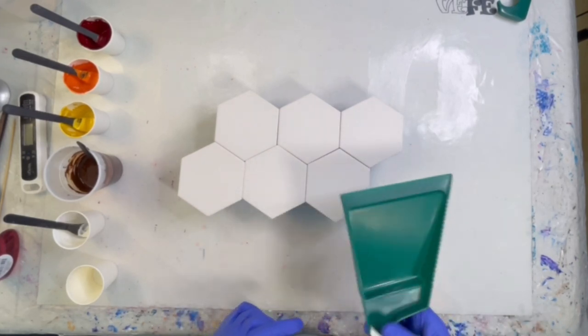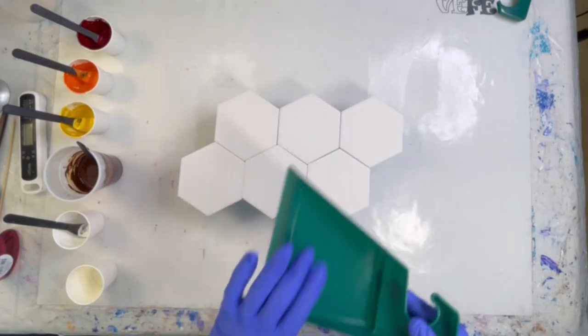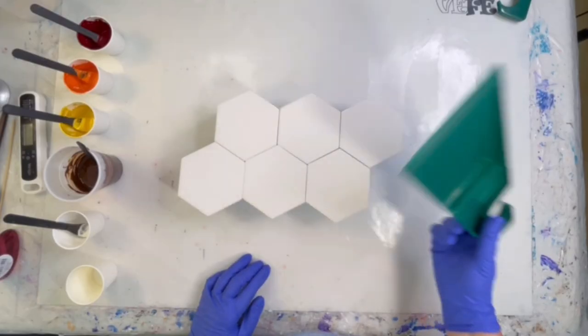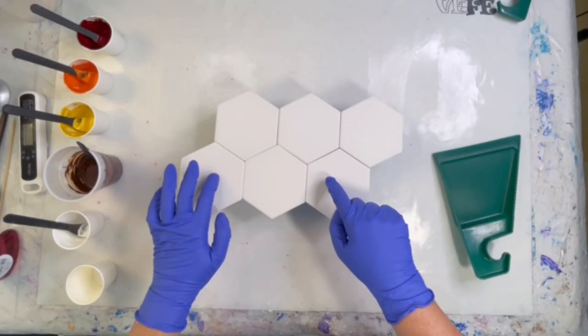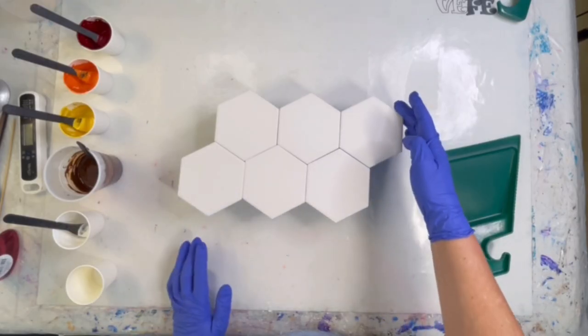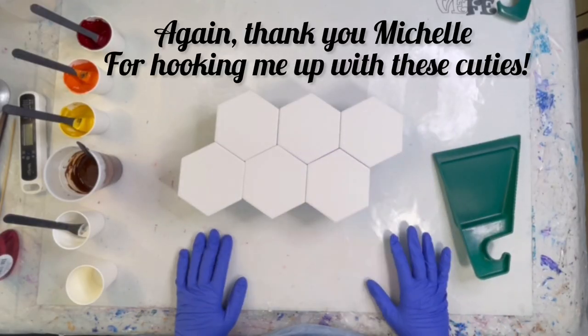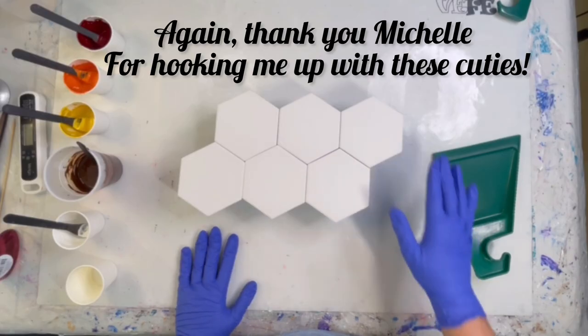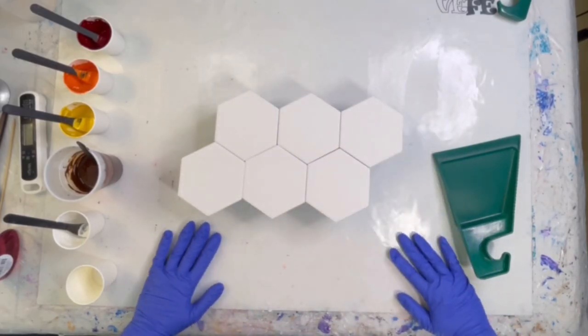But first of all, I knew I had a little itty bitty dustpan, so that was a good start. And I'd also ordered these hexagonal tiles. They're four inch tiles. And I thought, I'm going to do this dustpan pour over these tiles.